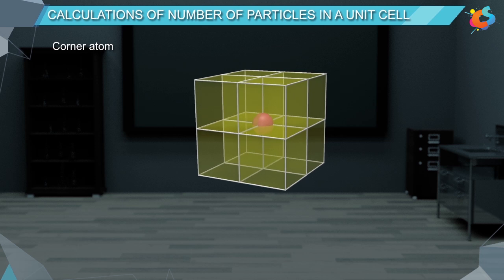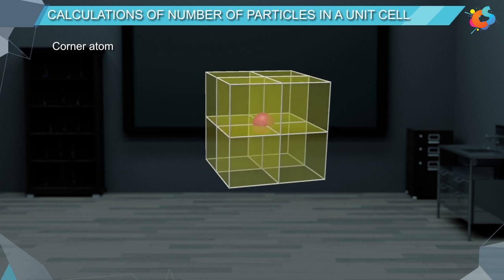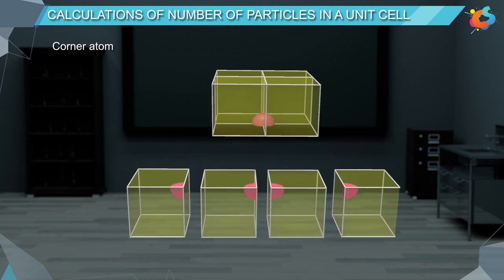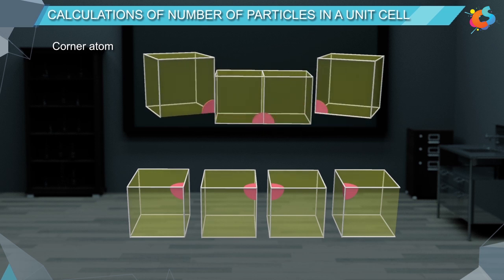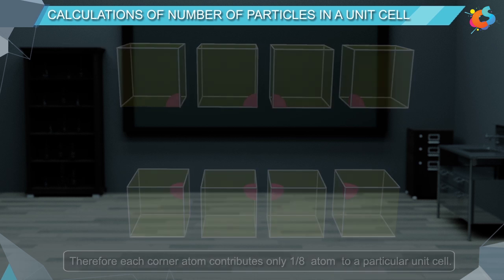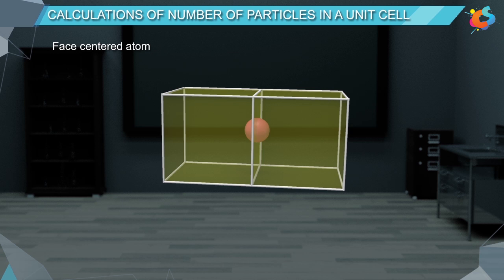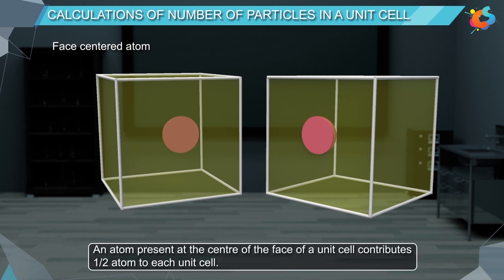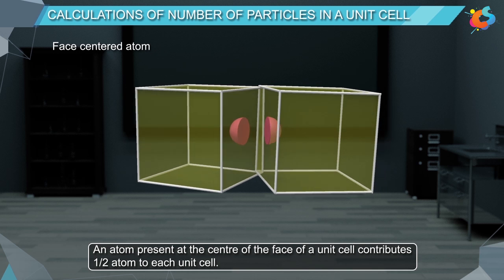A corner atom is shared equally by eight unit cells — four unit cells in the lower layer and four unit cells in the upper layer. Therefore, each corner atom contributes only one-eighth atom to a particular unit cell. A face-centred atom is shared equally by two unit cells having a common face. Therefore, an atom present at the centre of the face of a unit cell contributes half an atom to each unit cell.